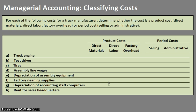Let's take a look at some examples and categorize them into product costs and period costs, then classify them further to decide what type of product cost or period cost they are. Here we have a truck manufacturer, and one of the first costs we see is the truck engine. Obviously the truck engine goes into manufacturing the truck, so it is a product cost — and now we have to decide if it's a direct material, a direct labor cost, or a factory overhead cost.